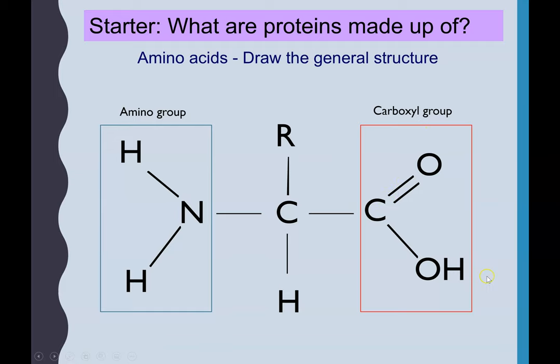The R group indicates the variable group. There's 20 different options of what could be at this point on the carbon. You do not need to know those 20 different options. Instead you just have to write the letter R, which indicates that's the section which is different for all 20 amino acids.